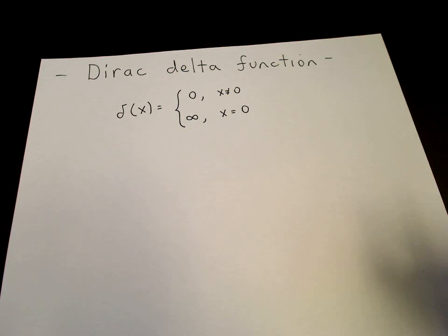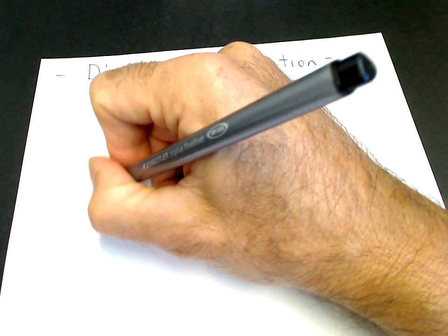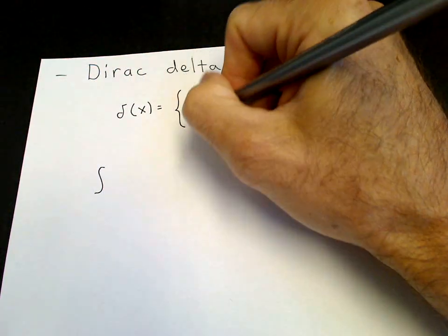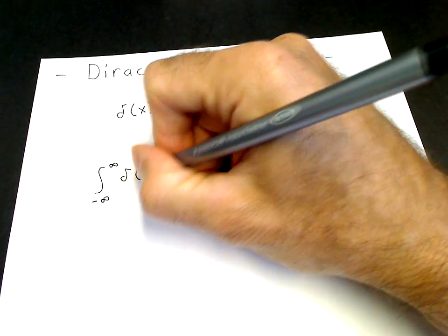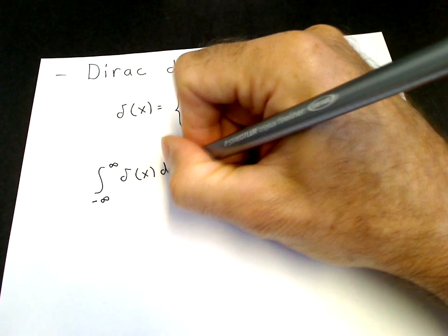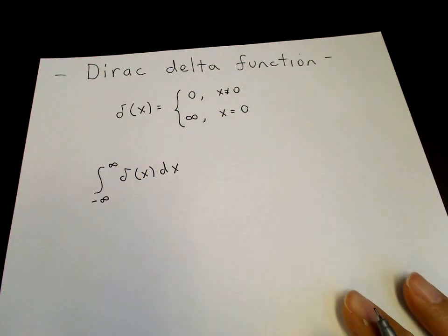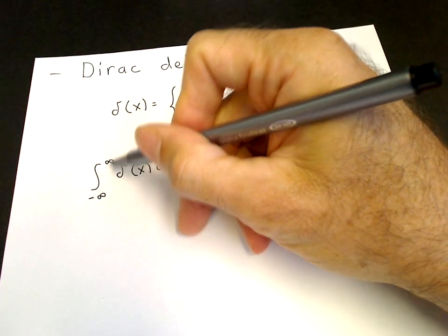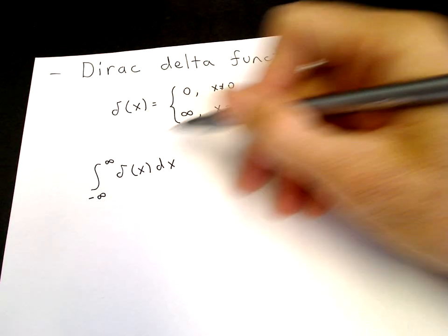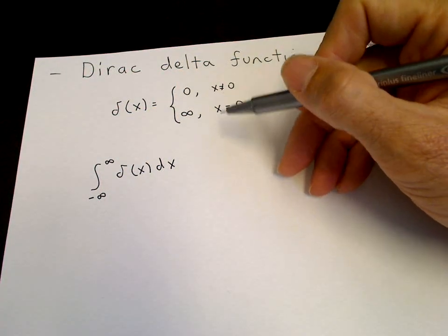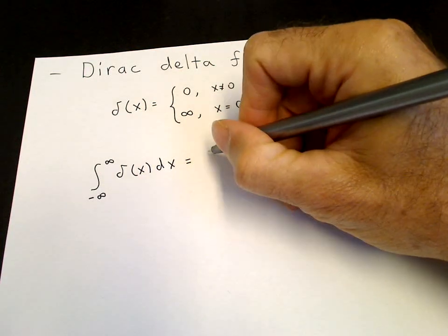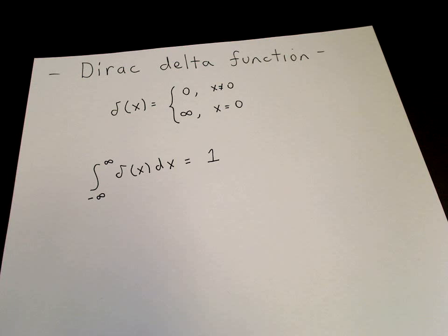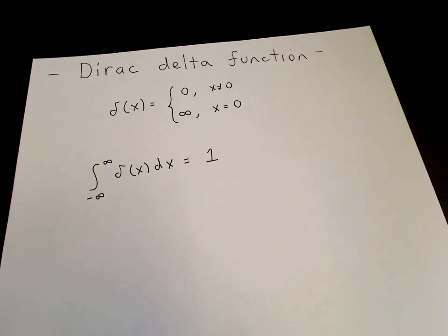It has the property that it integrates to 1. The integral across 0 — which we can write as minus infinity to infinity of delta(x) dx — the only thing important about these limits is that it goes from a negative number to a positive number, crossing the singularity at 0. This integral is equal to 1, so the delta function has a unit area under it.